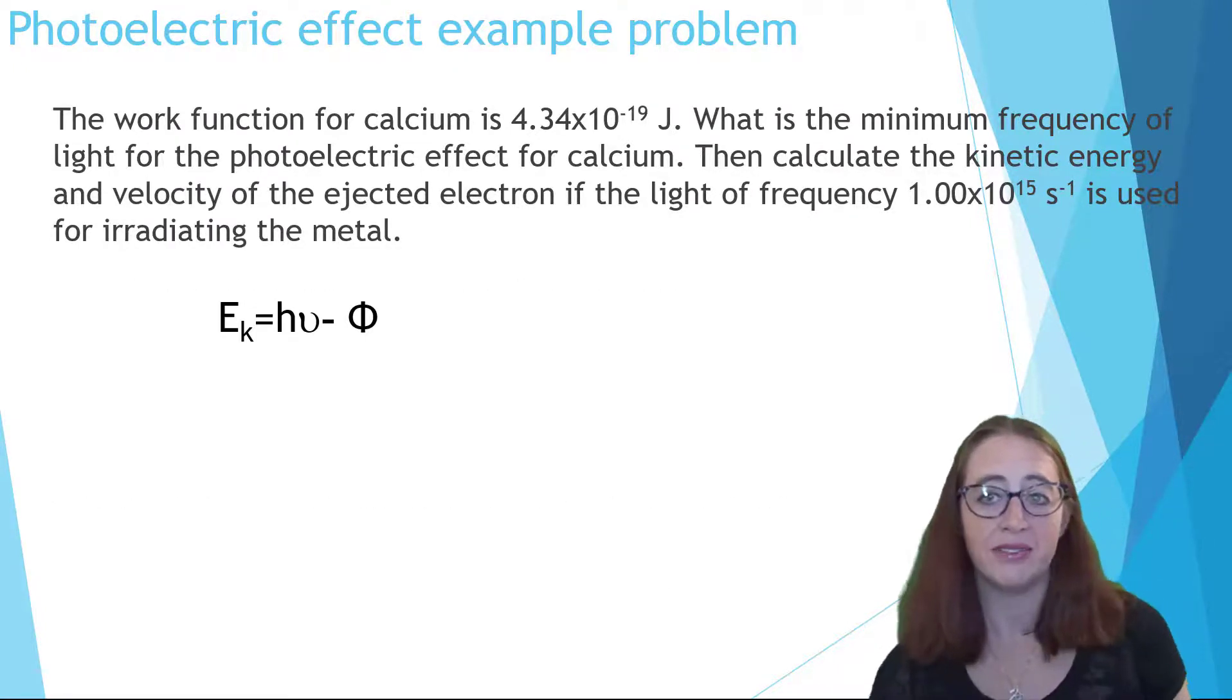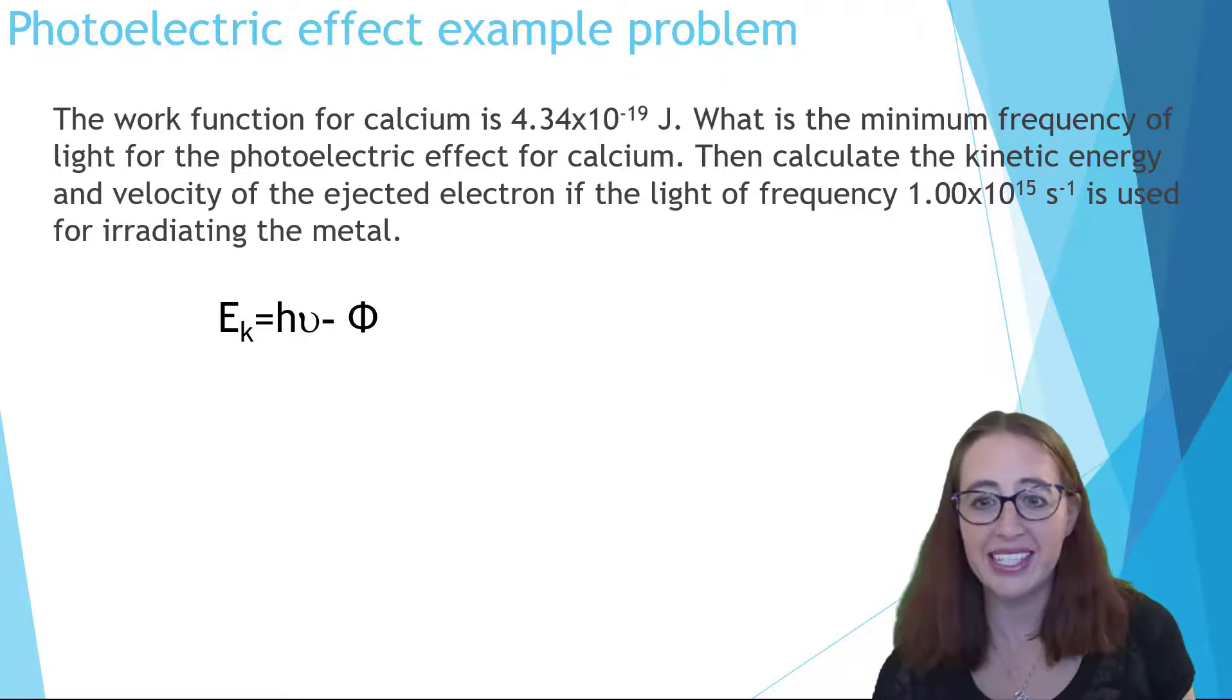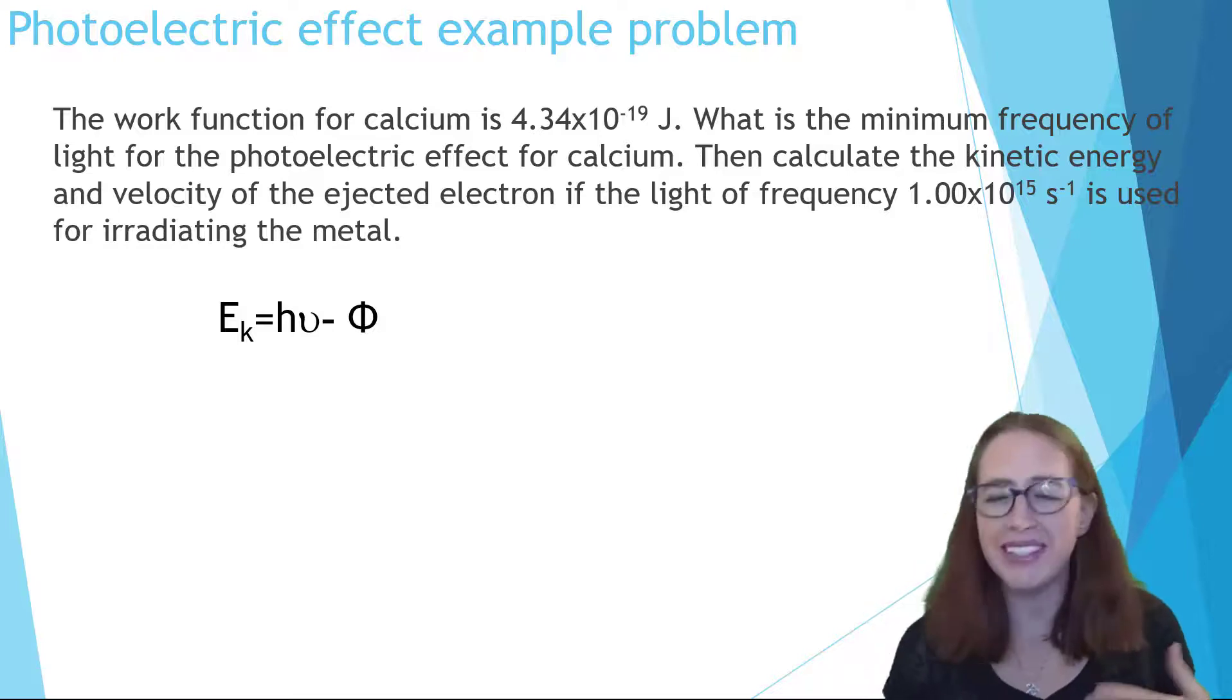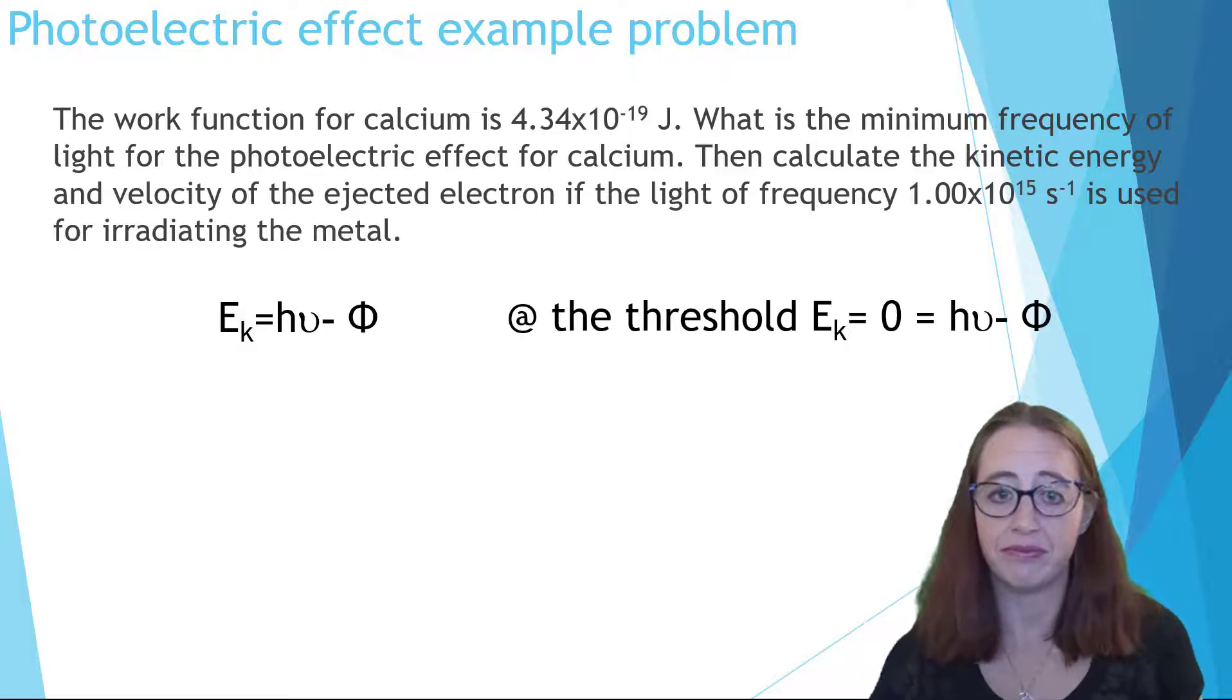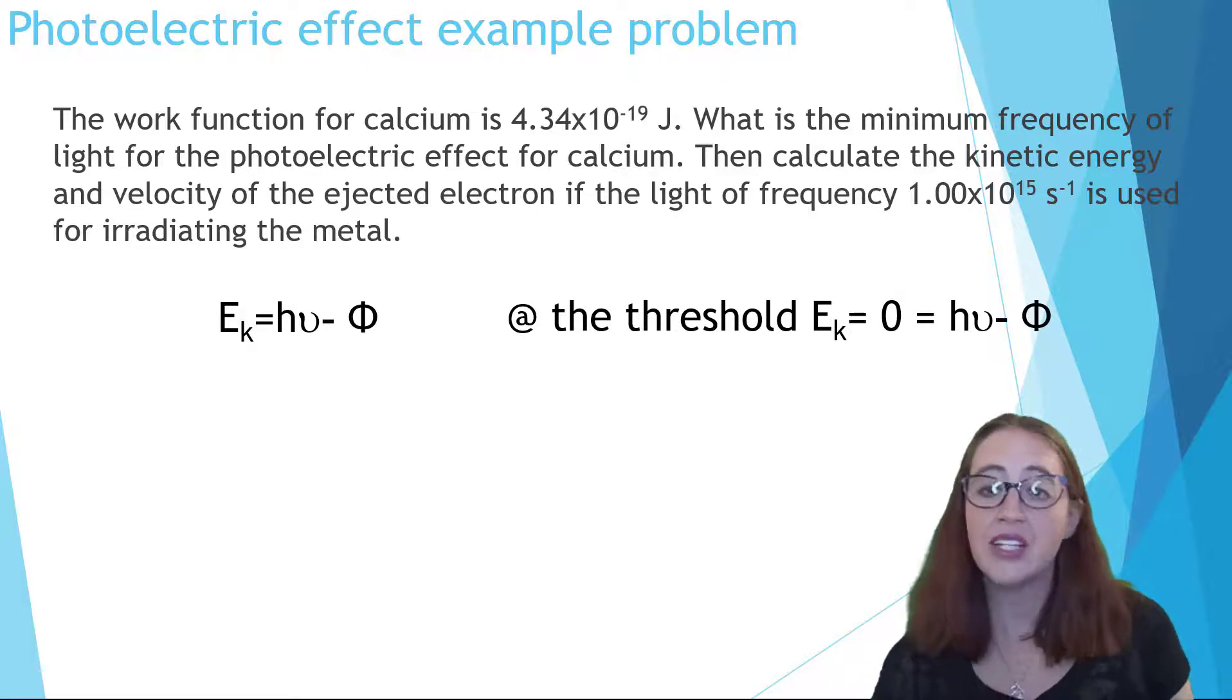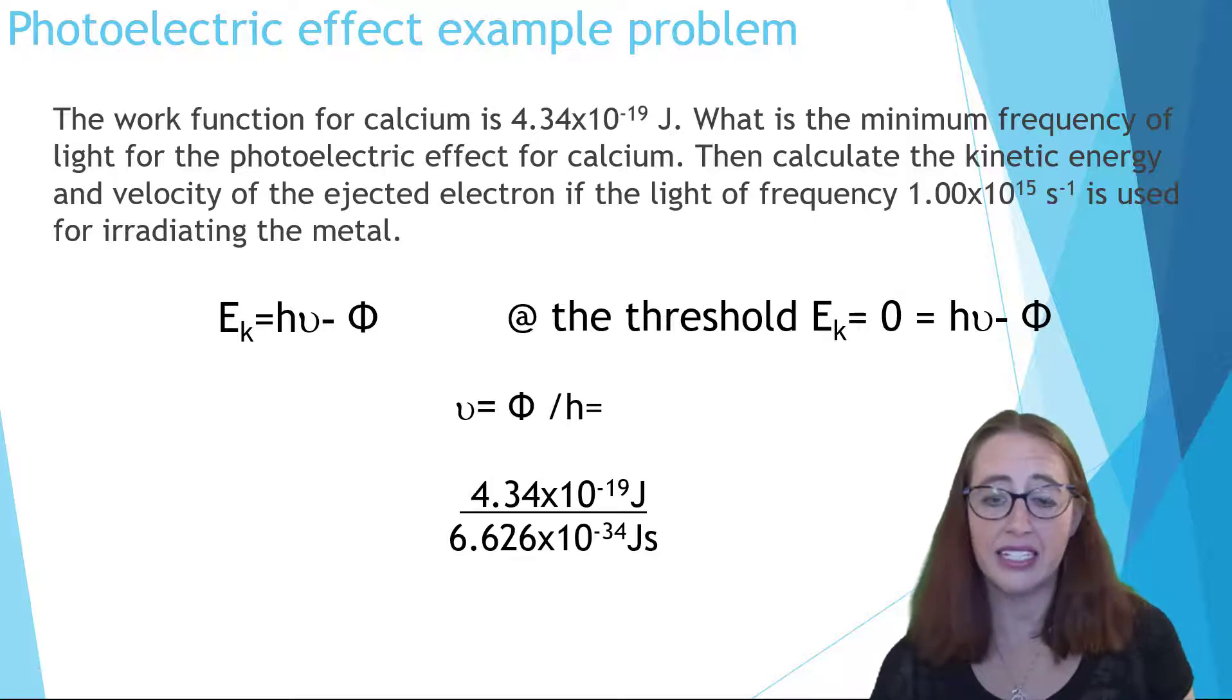Now that we have a plan we'll work through this with numbers. We must first find the threshold frequency. This is when the electron will be knocked loose but no kinetic energy will be transferred. Since the kinetic energy equals zero, we'll know that h nu is equal to the work function. So now let's solve for frequency. This gives us the minimum frequency of light that will eject an electron from calcium.